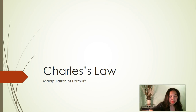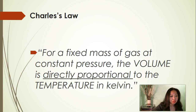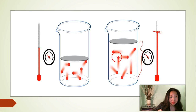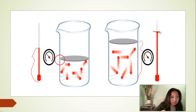Charles's Law states that for a fixed mass of gas at constant pressure, the volume is directly proportional to the temperature in Kelvin. What does it mean by directly proportional? It means that as the temperature increases, the volume of gas increases, and vice versa. So as the temperature decreases, the volume of gas also decreases.